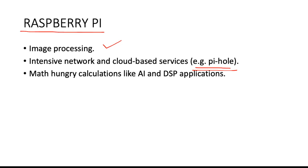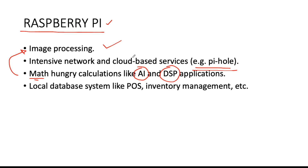Next are math-intensive calculations like artificial intelligence and digital signal processing, which is somewhat related to our first point on image processing. Any kind of heavy calculation is much more applicable to a Raspberry Pi compared to an Arduino. Also, applications that require database systems — like POS and inventory management — suit the Raspberry Pi because it has far greater memory compared to an Arduino.